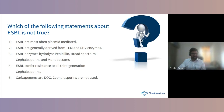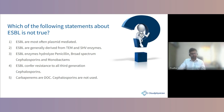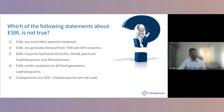ESBLs confer resistance to at least one drug in third-generation cephalosporins — not all third-generation cephalosporins as stated. Carbapenems are the drug of choice. The statement that cephalosporins are not used is not true — cephalosporins combined with beta-lactamase inhibitors can be used. So options four and five are wrong.